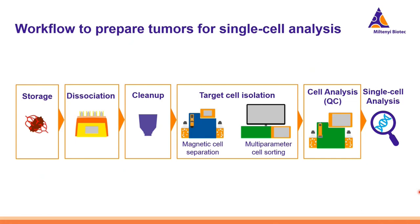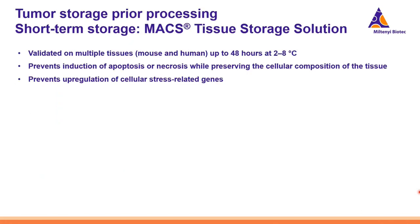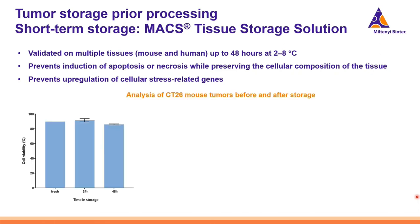Sometimes it's necessary to store tumors because we need to ship them to collaboration partners, or we cannot simply process them at the very same time when they have been extracted. For this, it's quite convenient to perform short-term storage of the tumors using MACS Tissue Storage Solution. This solution has been validated on multiple tissues from both mouse and human origin for at least 48 hours at 2 to 8 degrees. The solution prevents induction of apoptosis or necrosis while preserving the cellular composition of the tissues. We can see the analysis of CT26 mouse tumors before and after storage, and the viability of the cell suspensions was nicely preserved over time.